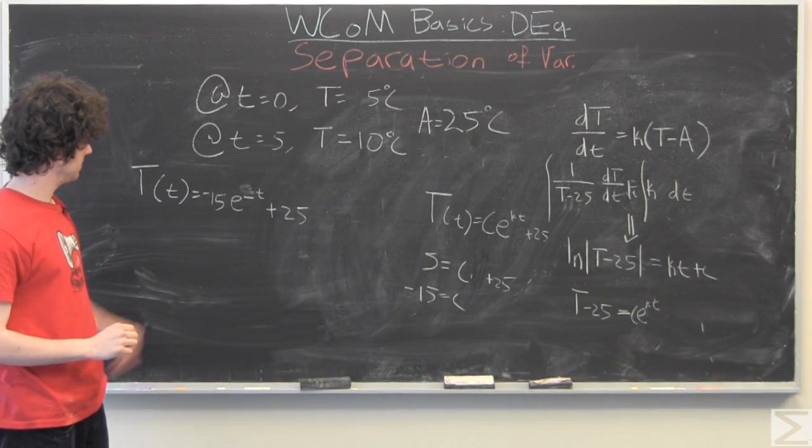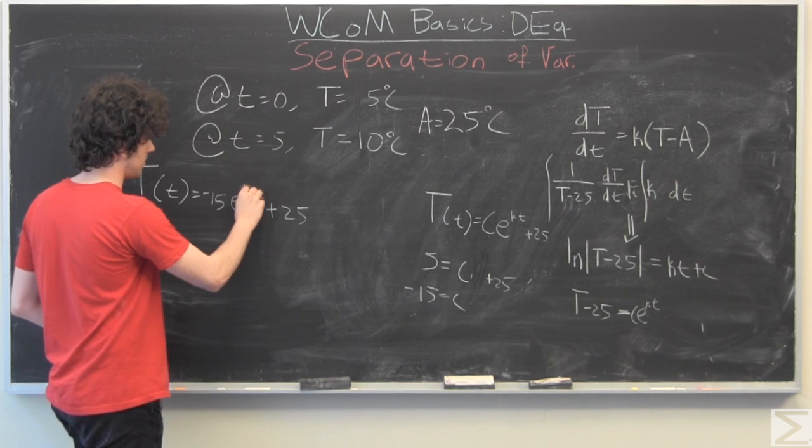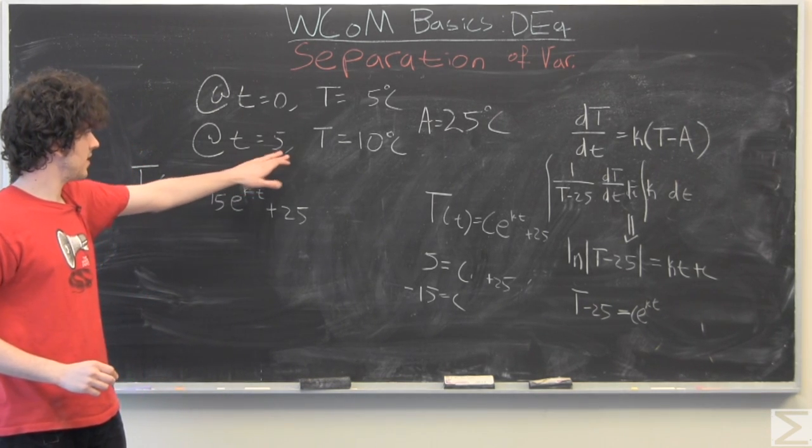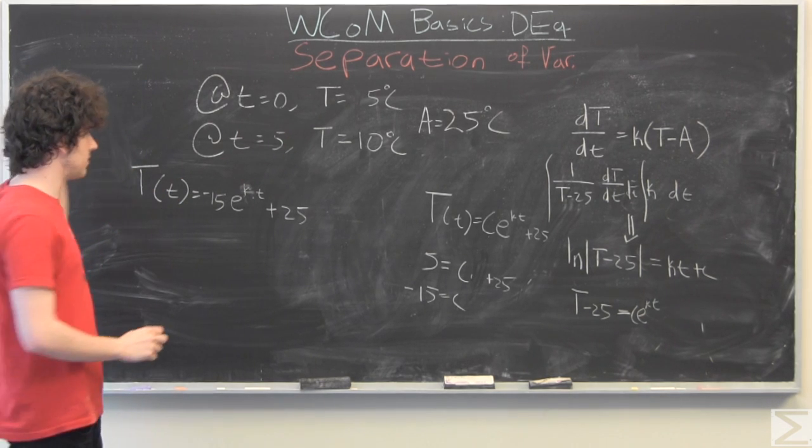So I'll just write a new master equation here. And now I'll just use this one to solve for K at time T equals five, capital T is 10 degrees Celsius.